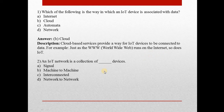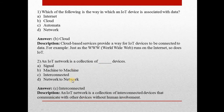Question number two: An IoT network is a collection of dash devices. Answer is C — Interconnected devices. An IoT network is a collection of interconnected devices that communicate with other devices without human involvement.